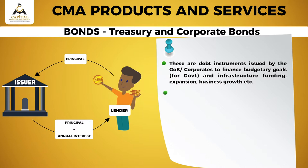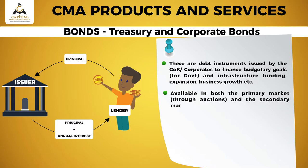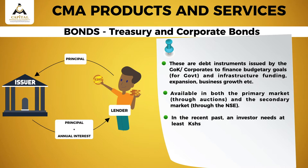Bonds are available in both the primary market through auctions and the secondary market through the NSE. In the recent past, an investor needs at least 50,000 Kenya shillings to purchase bonds in Kenya.